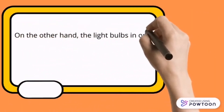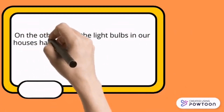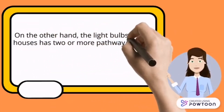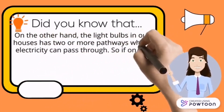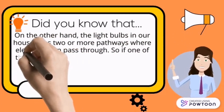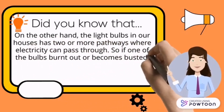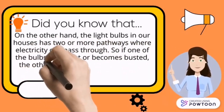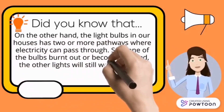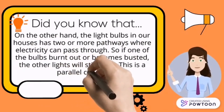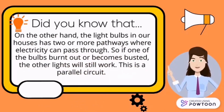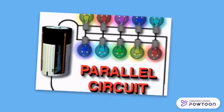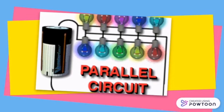On the other hand, the light bulbs in our houses have two or more pathways where electricity can pass through. So if one of your bulbs burns out or becomes busted, the other lights will still work. This is a parallel circuit — here is an example of a parallel circuit.